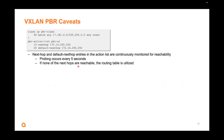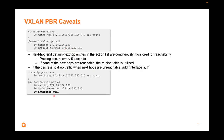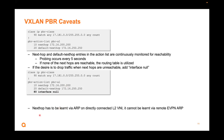Further PBR caveats: there is probing that occurs for next hop IPs every five seconds. If all next hops are not reachable due to probing, the routing table is utilized. If the first next hop is not reachable, it goes inactive; the second one, if active, will be used. If you want to drop traffic when all next hops are unreachable, you need to add 'interface null'. Without that, the routing table is used as fallback. Next hop has to be learned via ARP or directly connected L2 VNI — it cannot be learned via remote EVPN ARP. If it's learned via EVPN ARP, it will not work.